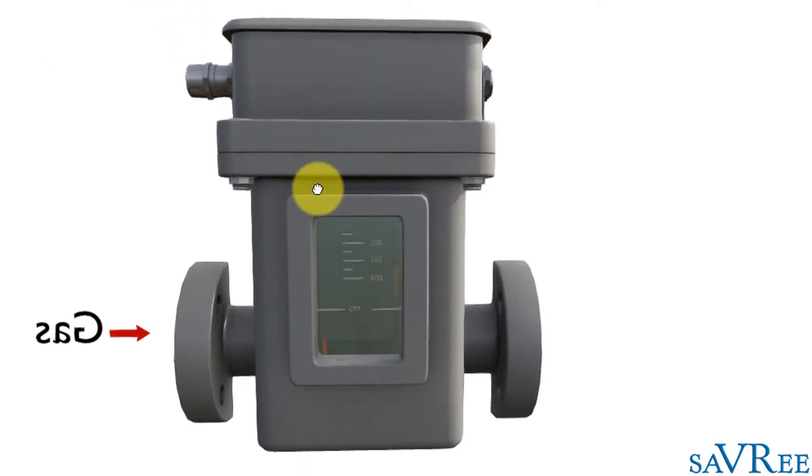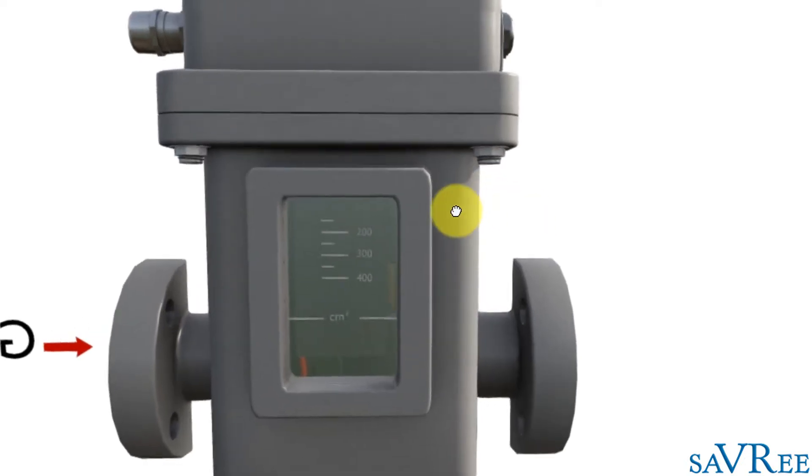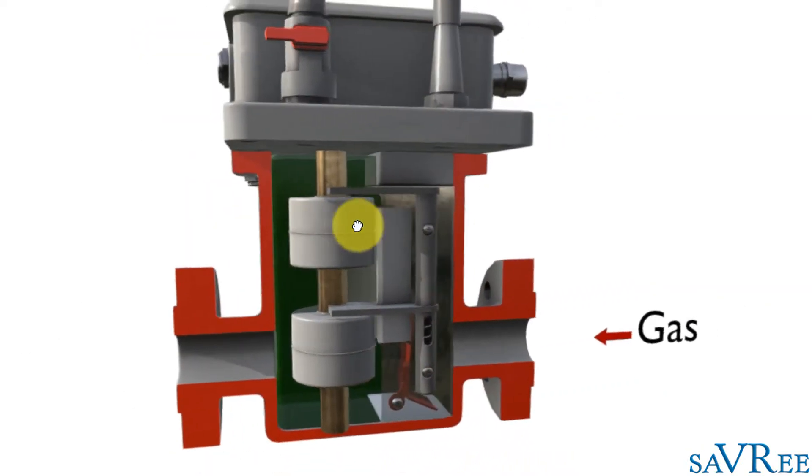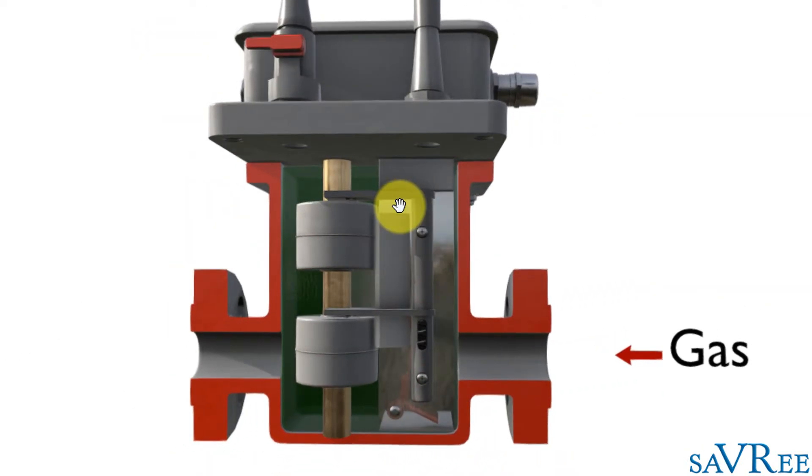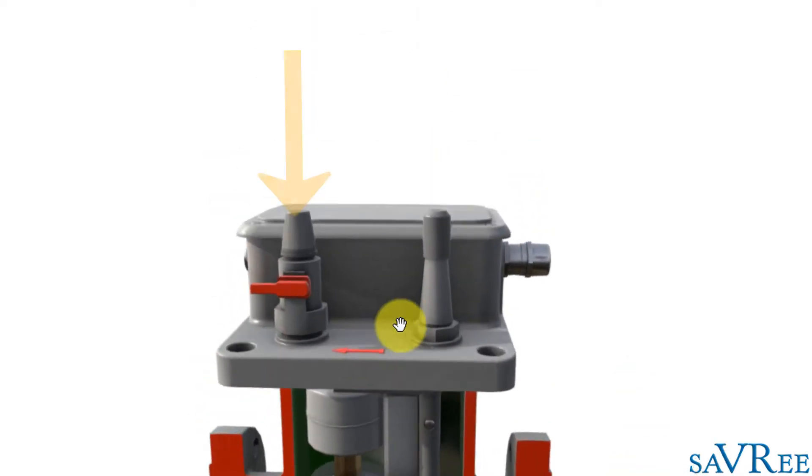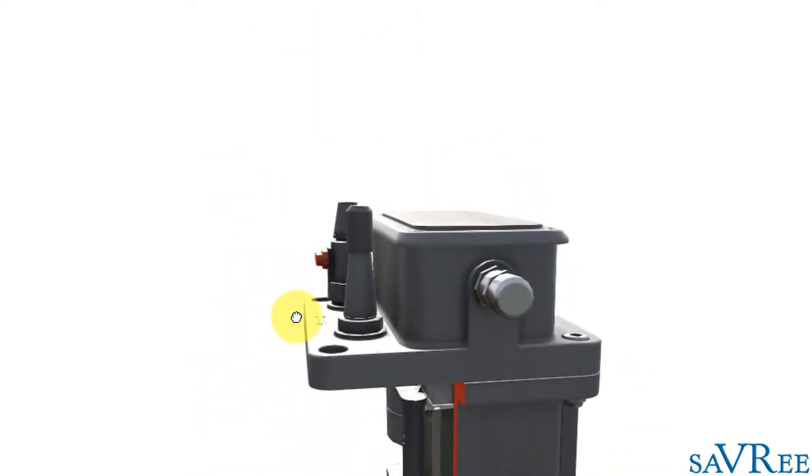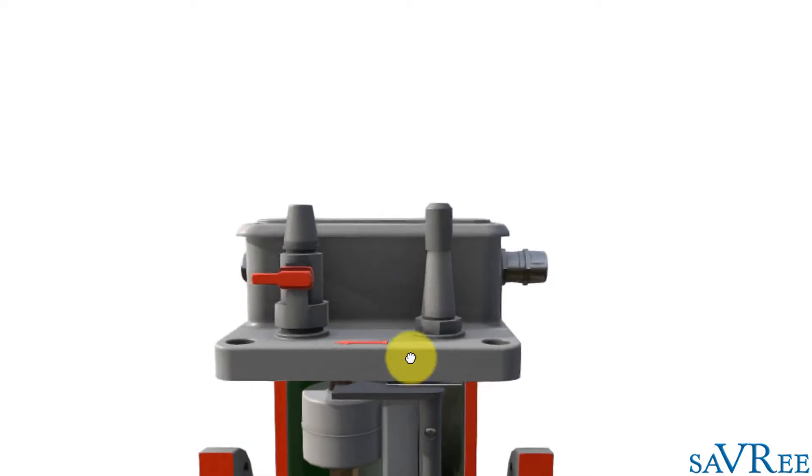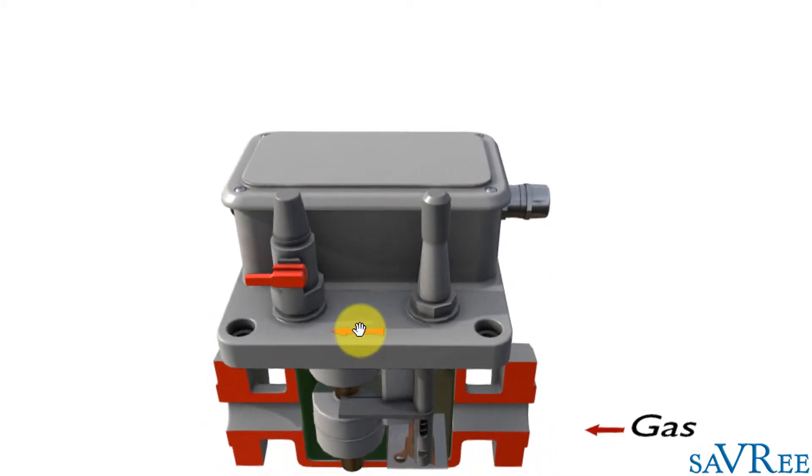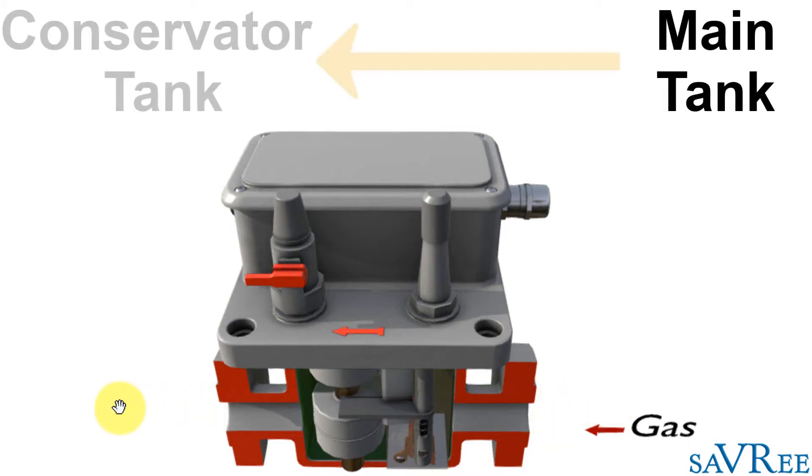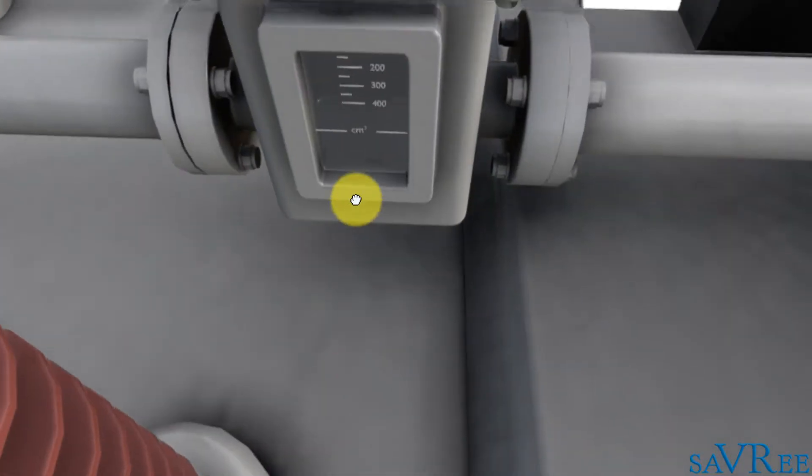Here is our Buchholz relay again. We've taken a cross section and we can see some of the other components on the top here, such as an air bleed or a gas bleed, terminal control box. We've also got an arrow here signifying that that is coming from the main tank on the right-hand side and going up to the conservator tank on the left-hand side.